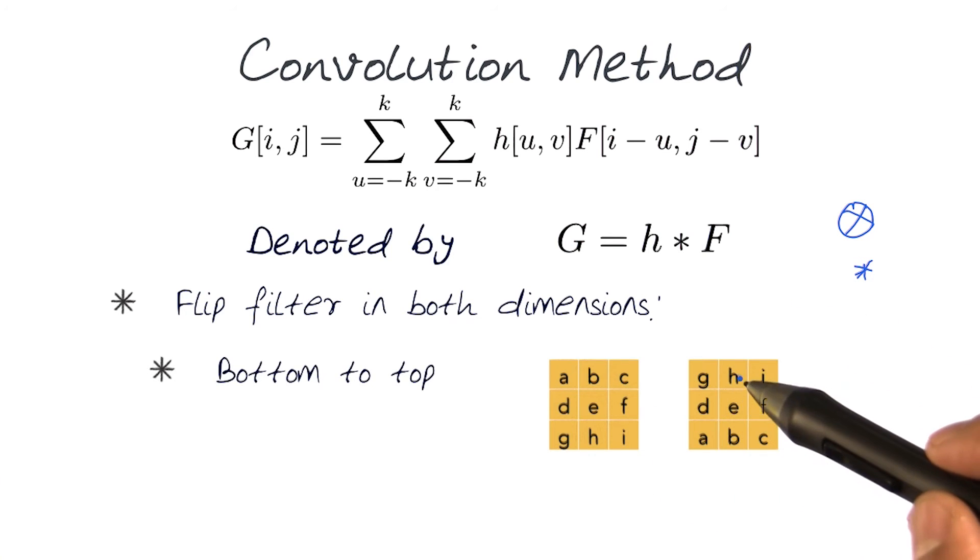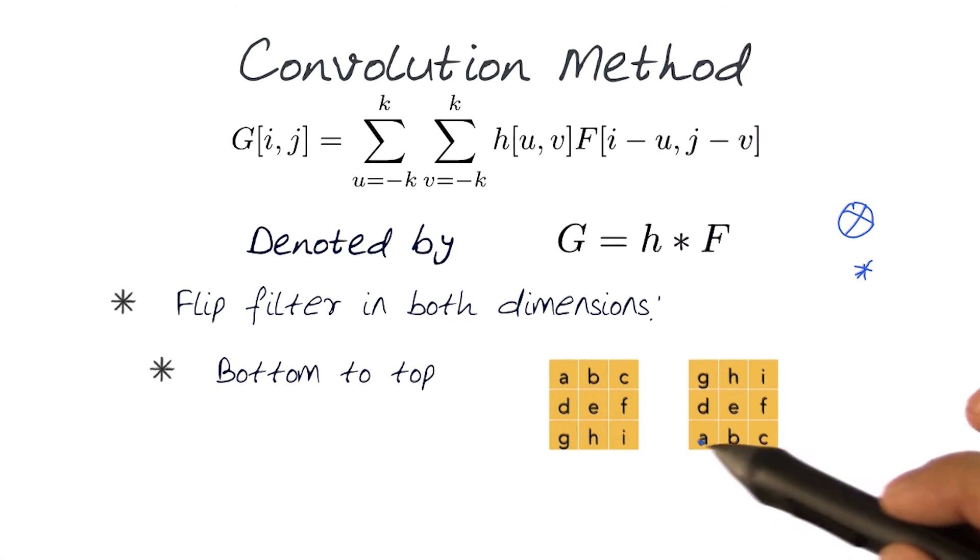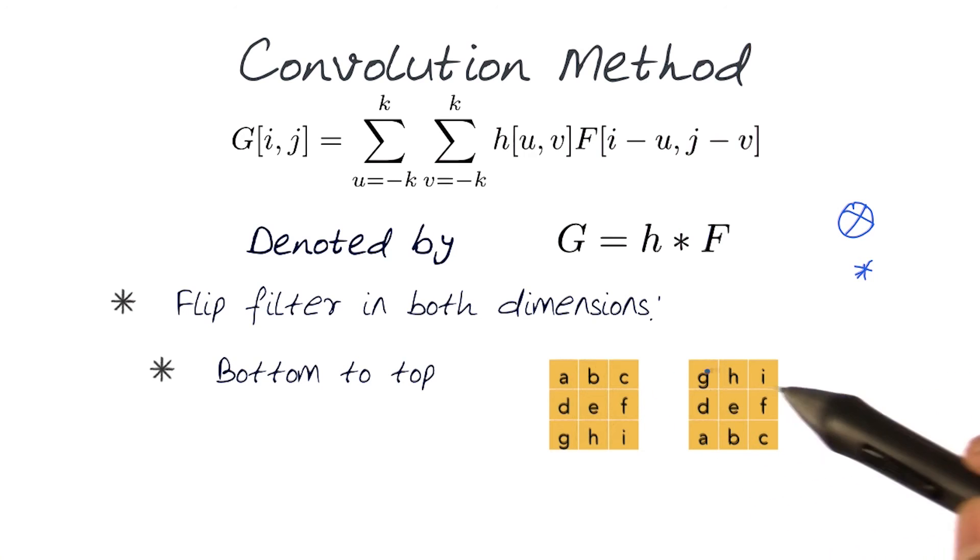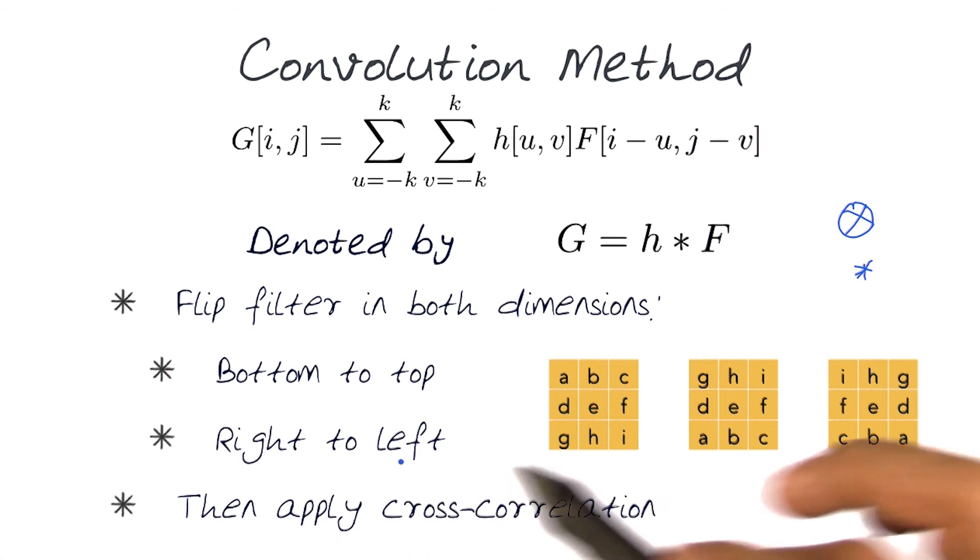So first it's flipped bottom to top. That is the top row is now at the bottom here. And of course the other flip is when it's right to left. And then we can apply cross correlation.